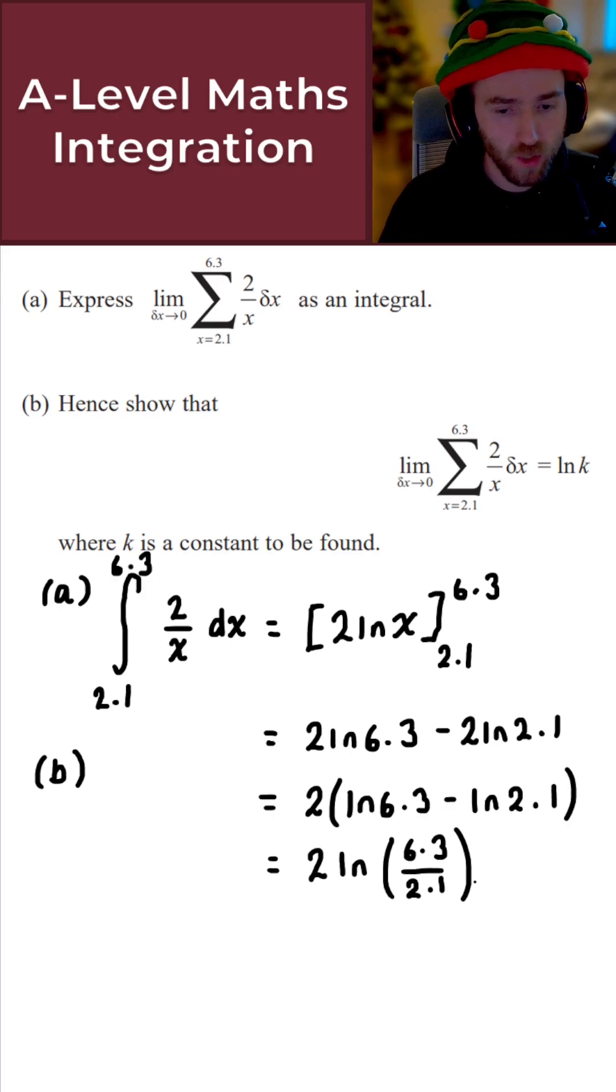Now 6.3 over 2.1 equals 3, so what I've got here is simply 2 ln 3.